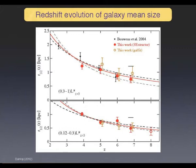These are normal galaxies — the bright ones and the faint ones. The change in size is dramatic from redshift 8 to 2, and it's changing also up to the local universe. So the fact that they are small galaxies is not surprising.